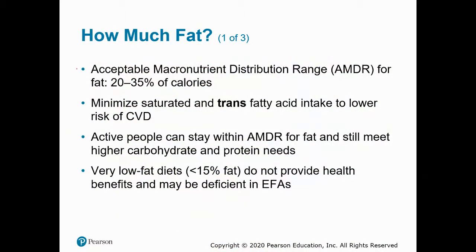How much fat should we eat? The acceptable macronutrient distribution range for fat is 20 to 35 percent of total calories. Of all the calories you eat in a day, 20 to 35 percent should come from fat. The suggestion is to minimize saturated fat and trans fat intake, which will help lower the risk for cardiovascular disease.